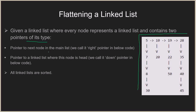The pointer to the next node in the main list is one type — we call it the right pointer. In the main list we have the right pointers. Then we have the second type of pointers, which are pointers to the linked list where the node is the head — we call these the down pointers.